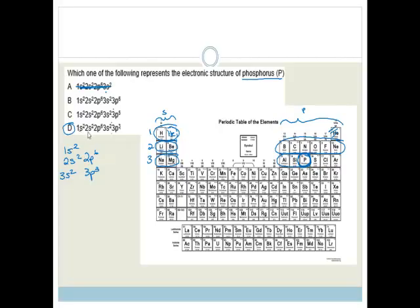So the full electronic structure is 1S2, 2S2, 2P6, 3S2, 3P3. Please know how to use your periodic table to work out electronic structures.